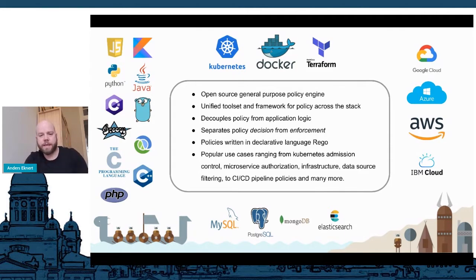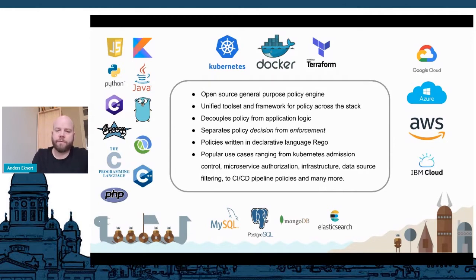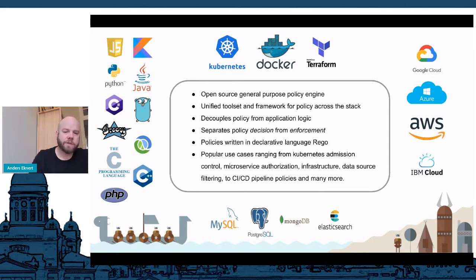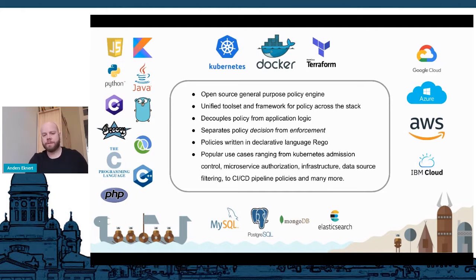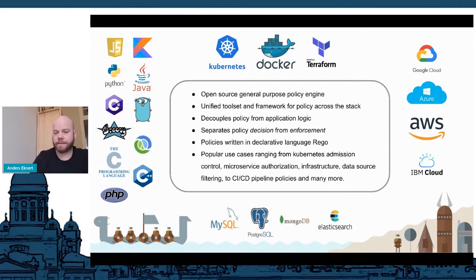These policies are written in a declarative language called Rego, and we'll look into that in a bit. Since OPA is a general-purpose policy engine, it has use cases ranging from Kubernetes mission control, microservice authorization, and API authorization. You can use OPA for infrastructure as code, data source filtering, CI/CD policies, and whatnot. So anywhere where you think there's probably a good fit for some type of policy, that's where OPA fits in.